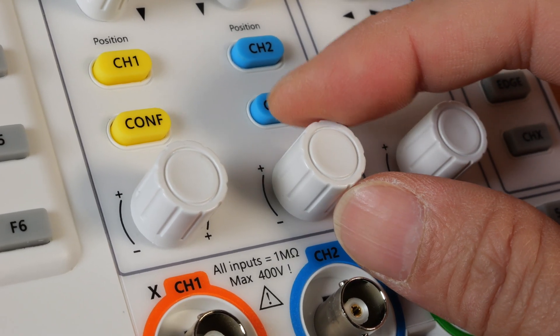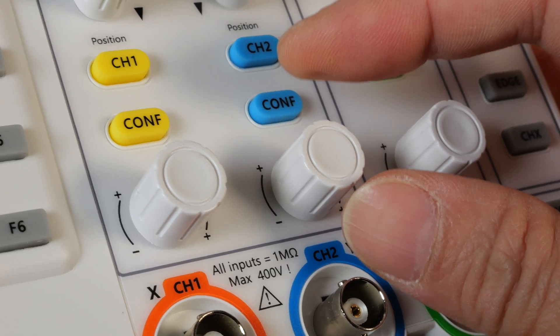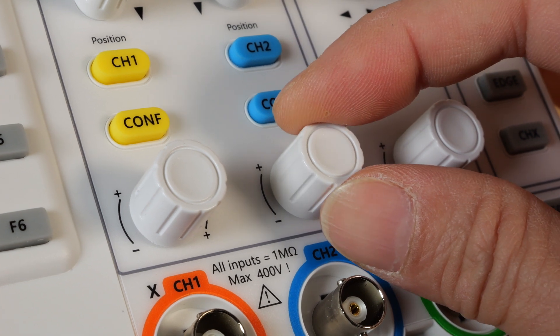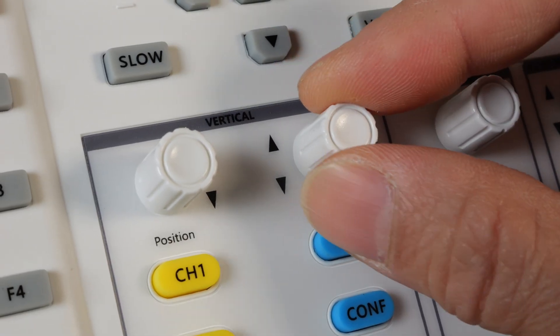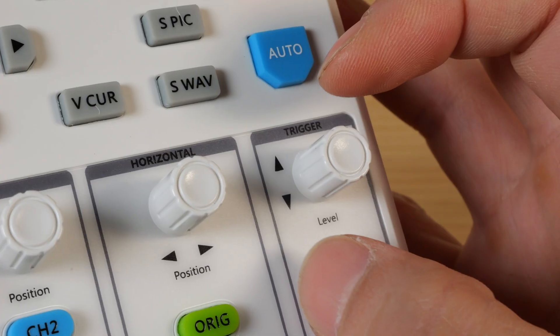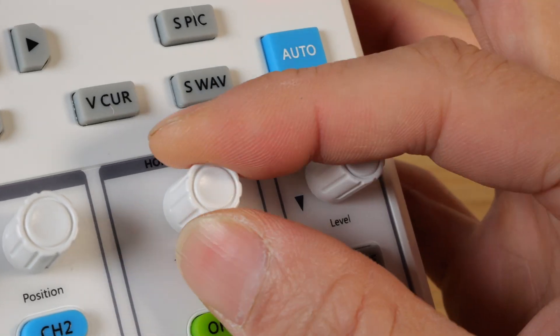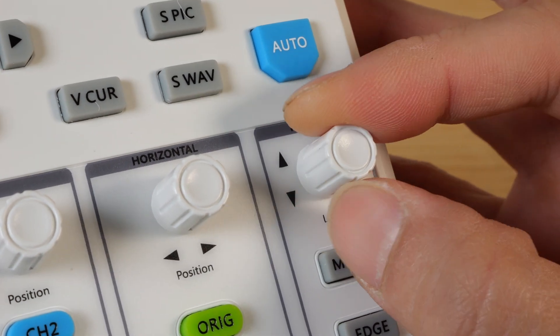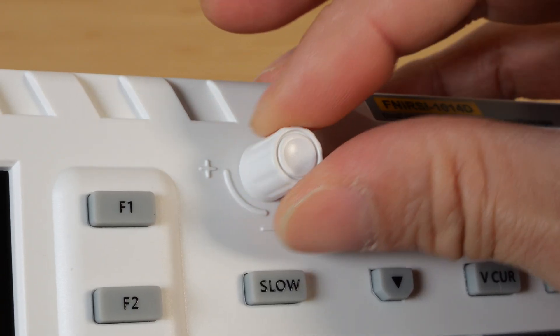You have these adjustment knobs that feels like there's indentations as you move them. And these position knobs are traditionally smooth, so you have your up-down for channel 1 and channel 2. There's also smooth adjusting horizontal knob, and also the trigger for up-down. There's also a plus-minus knob here.